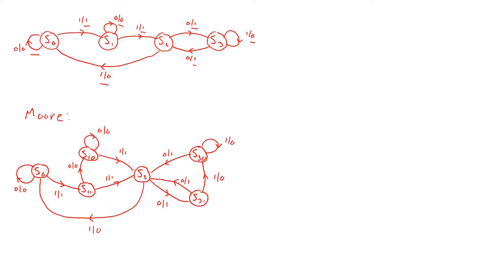We are now halfway to converting the Mealy graph into a Moore graph — all edges entering a state output the same value. However, it is not yet a true Moore graph, because in a Moore graph the output should only depend on the current state and not the input. So we need to take the output values from the entering edges and place them as the output inside each state.